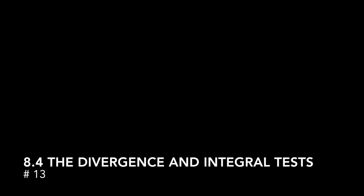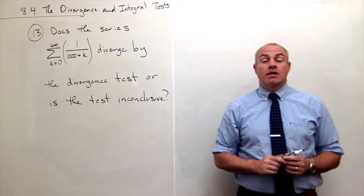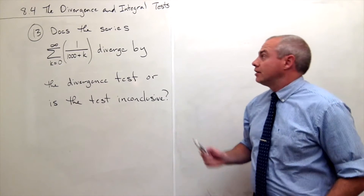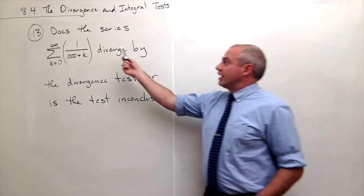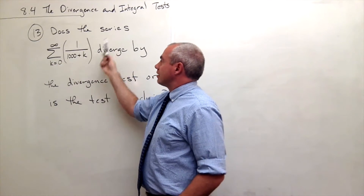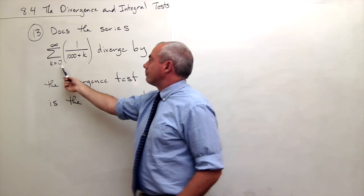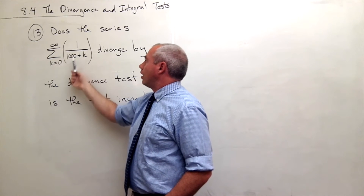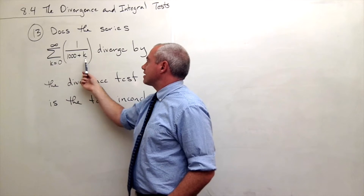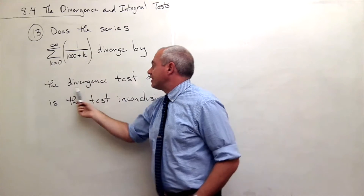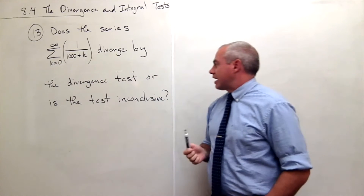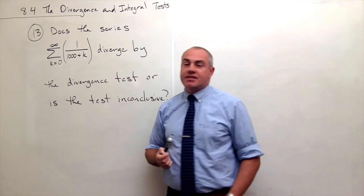I'm the calculus professor and today I'll be talking to you about the divergence and integral tests. In problem number 13, we'd like to answer the question: does the series sum k going from 0 to infinity of 1 over 1000 plus k diverge by the divergence test, or is the test inconclusive?